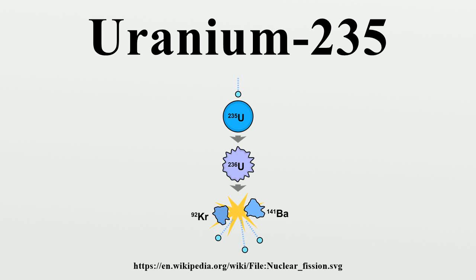The fission of one atom of U-235 generates 202.5 MeV, equal to 3.24 × 10⁻¹¹ J, which translates to 19.54 terajoules per mole, or 83.14 terajoules per kilogram.